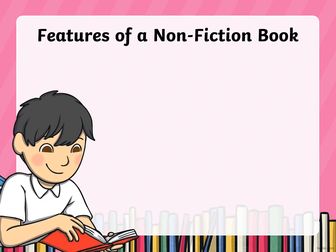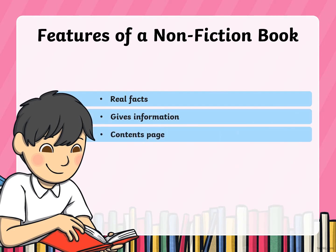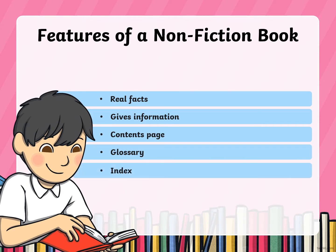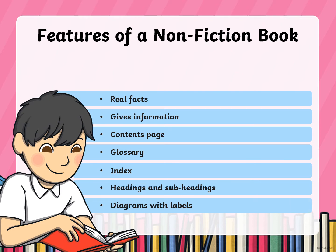So we looked yesterday at the features: real facts, gives information. Sometimes it has a contents page, but that's usually in an information book and the piece of writing we're going to look at today is just one piece of writing. A glossary — again you can sometimes get these on one piece of writing but they're usually in books. An index is usually found in non-fiction books as well. Headings and sub-headings, diagrams with labels and some photographs.